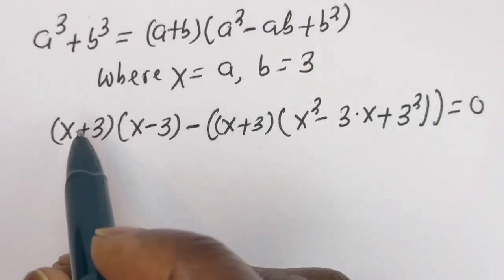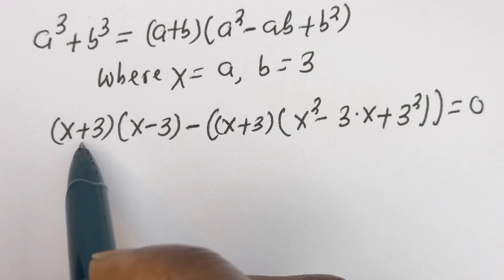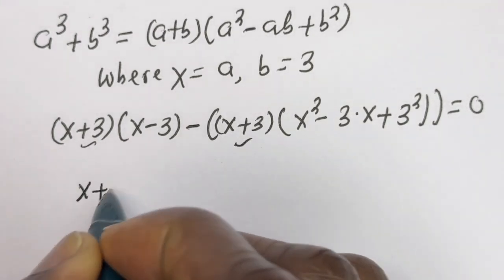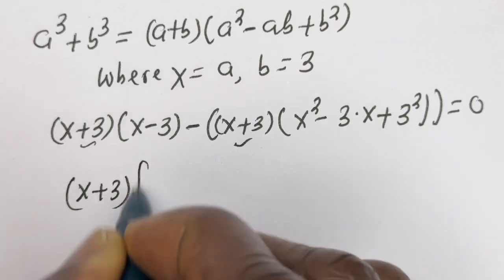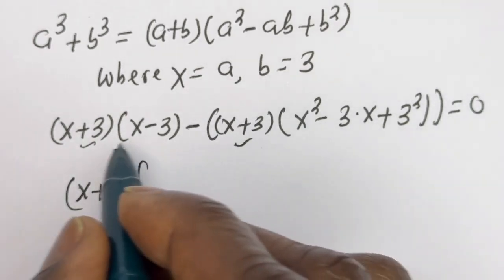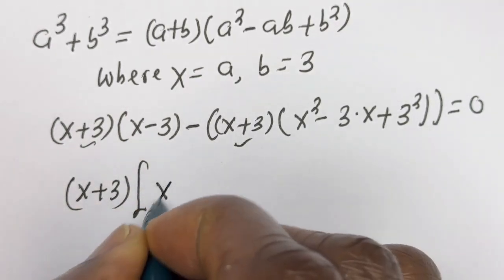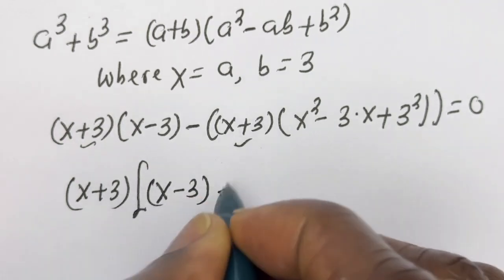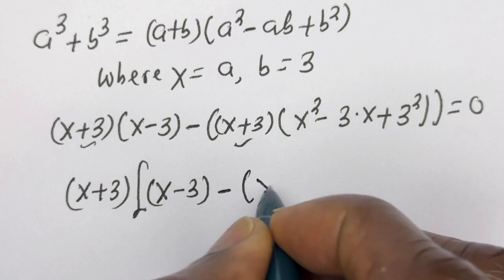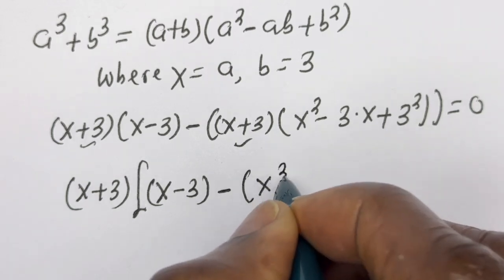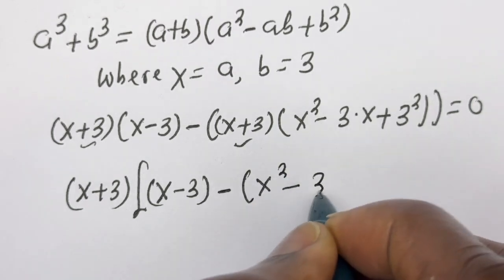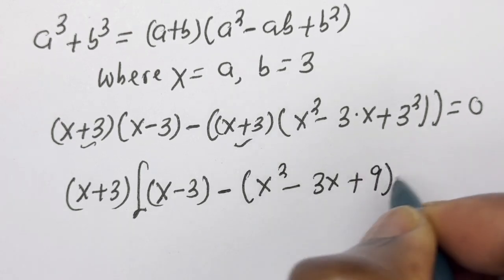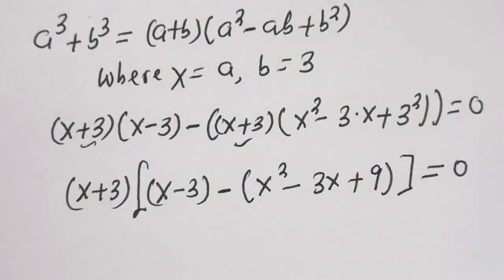So here we have s plus 3 as a common factor. If you divide through, we have s minus 3, then minus s squared minus 3 times s plus 9, is equal to 0.